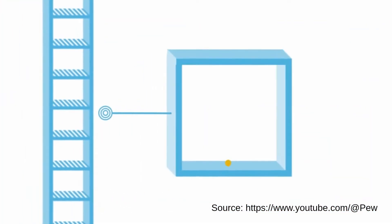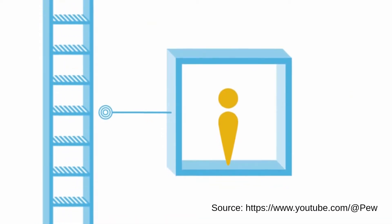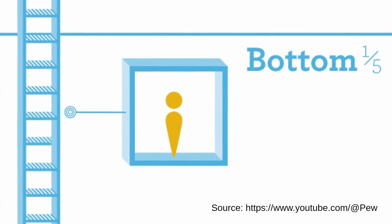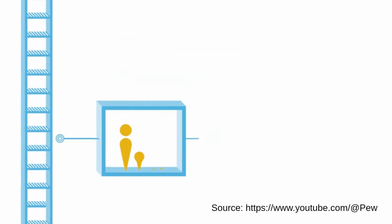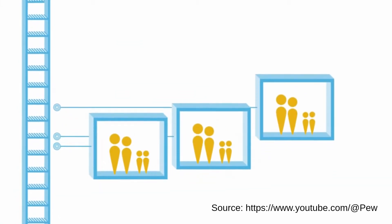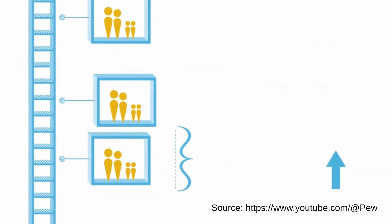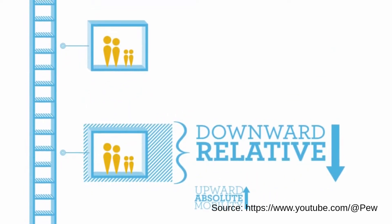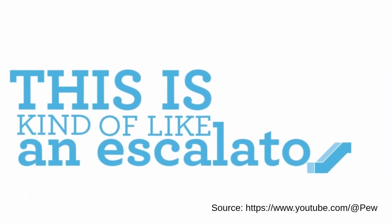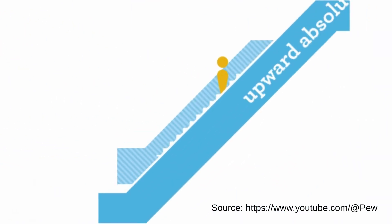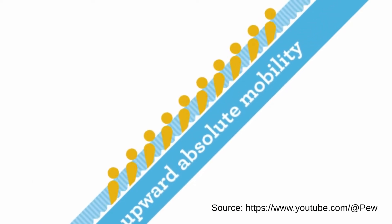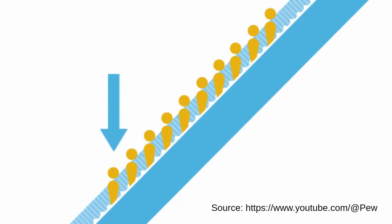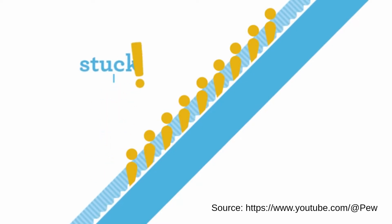What this means is that a person can experience upward absolute mobility — having more income — but not upward relative mobility, not moving out of the bottom. For example, if a family grows richer over time but at a slower rate than many other families, they can experience upward absolute mobility at the same time they experience downward relative mobility. This is kind of like an escalator: if everyone is moving up, everyone experiences upward absolute mobility. But if people don't change positions on the escalator as it's moving, those who began at the bottom remain at the bottom, even as they grow richer.